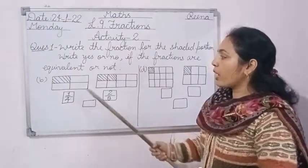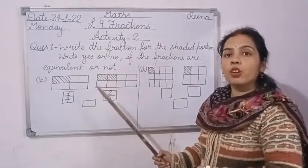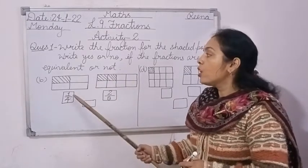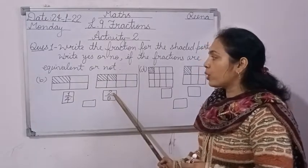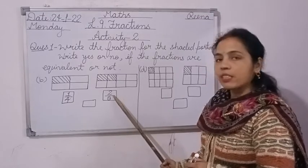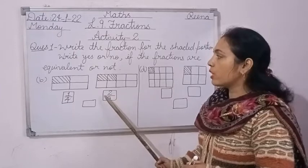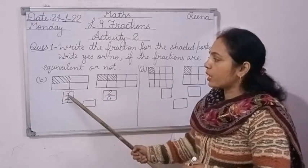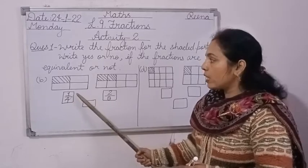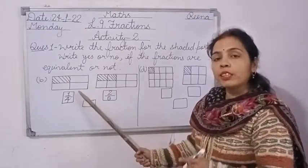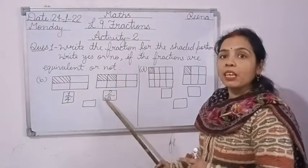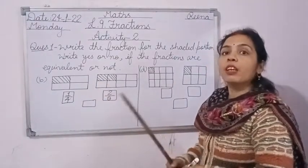Now check whether both fractions are equivalent. To check, divide 2 upon 8: divide both numerator and denominator by 2 — you get 1 upon 4. Or multiply 1 upon 4 by 2/2 — numerator and denominator both multiplied by 2 gives 2 upon 8. That means both fractions are equivalent.